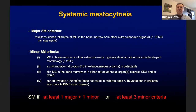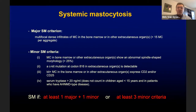The diagnosis of systemic mastocytosis is based on criteria. The diagnostic criteria include one major criterion — the presence of multifocal dense infiltrates of mast cells in the bone marrow or other extracutaneous organs — and four minor criteria: mast cells showing abnormal spindle-shaped morphology; the presence of a CKIT mutation at codon 816 in extracutaneous organs; KIT-positive mast cells expressing CD2 or CD25; and a serum tryptase level higher than 20 nanograms per milliliter.